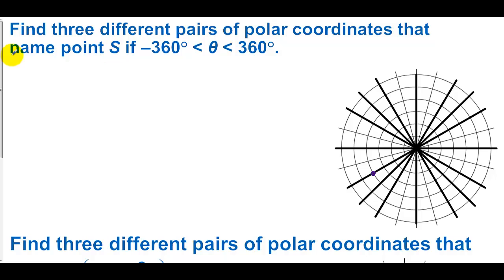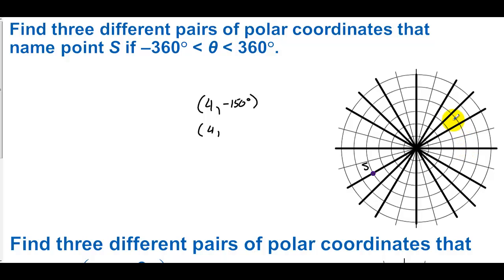Find three different pairs of polar coordinates that name point S, where angles are between -360° and 360°. Point S is on the fourth circle, radius 4. One option: (4, -150°), going to -90° and another 60°. Another: (4, 210°), going 180° plus 30°. A third: (-4, 30°), using a negative radius and going in the opposite direction to 30°.